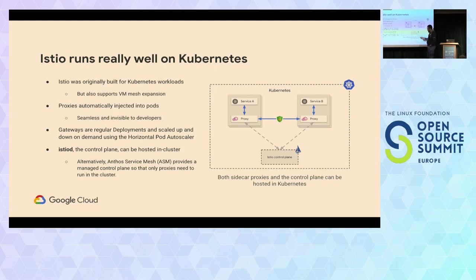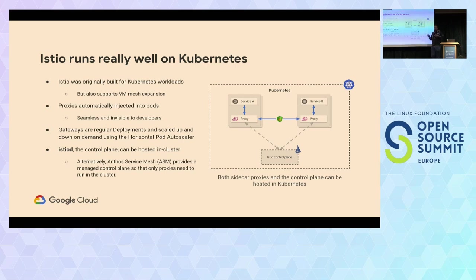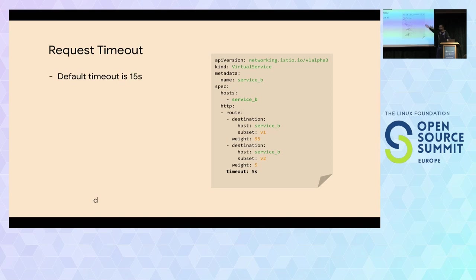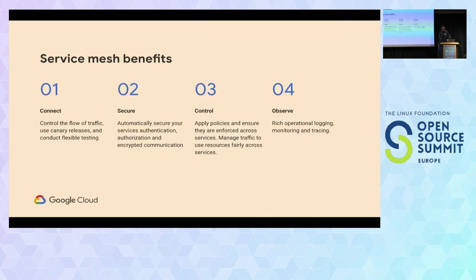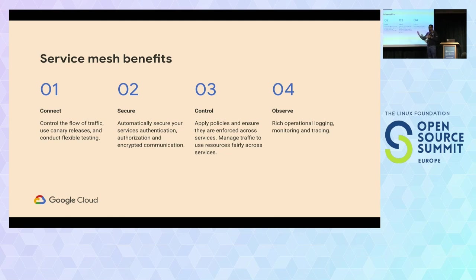Istio was created specifically to run on Kubernetes. Most service meshes actually run on Kubernetes, although some claim they can do VMs. Because it leverages Kubernetes-native ways of doing things — the control plane is just a pod, the proxy is just a container running inside the pod where your application is, and your configuration is a YAML file. In a nutshell, a service mesh gives you four main benefits: the ability to connect services together with service discovery; secure traffic with MTLS; control traffic with routing, timeouts, etc.; and observe by collecting telemetry.